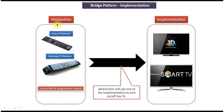On the left side you can see the abstraction. Suppose I want to turn on or turn off the TV — I can use a remote control which will initiate the turn on or turn off action. The implementation will be done by the original TV implementer, so Samsung TV or Sony TV will implement the turn on or turn off functionality. This abstraction will use one of these implementers to turn on or turn off the TV.